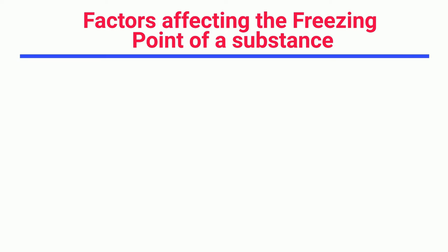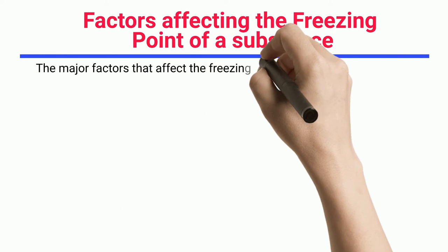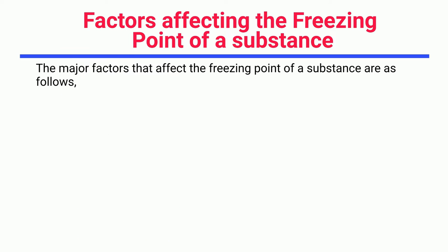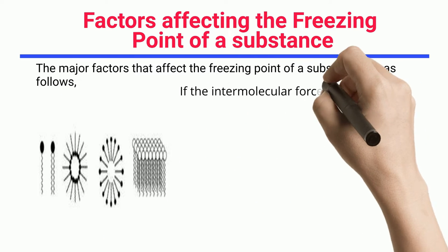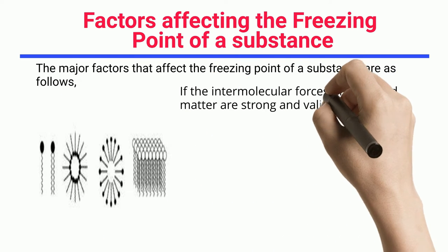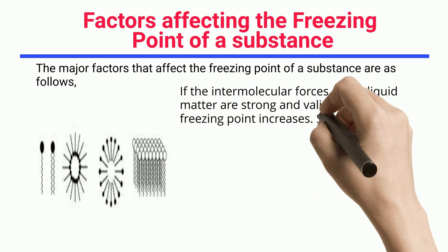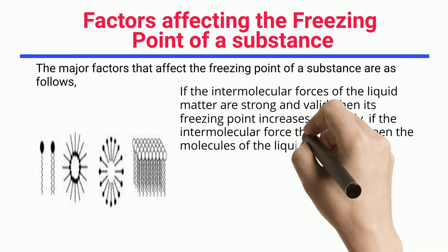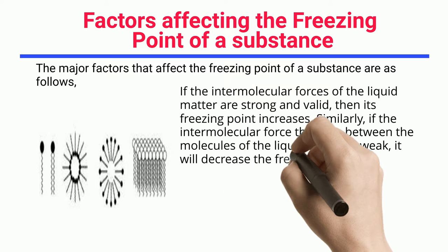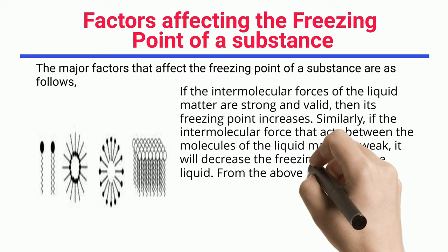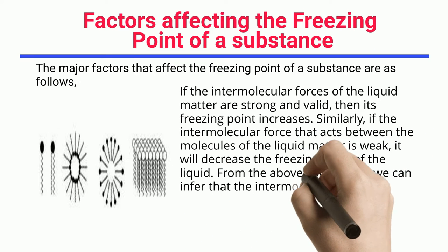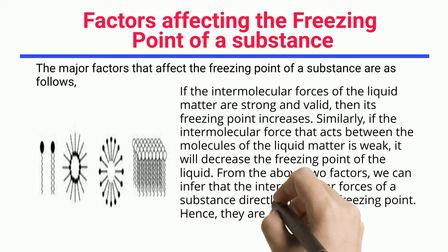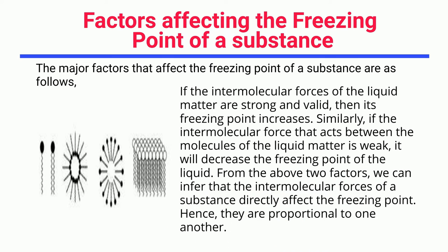Factors affecting the freezing point of a substance: the major factors that affect the freezing point are as follows. If the intermolecular forces of the liquid matter are strong, then its freezing point increases. Similarly, if the intermolecular force acting between the molecules of the liquid matter is weak, it will decrease the freezing point. From these two factors, we can infer that the intermolecular forces of a substance directly affect the freezing point.